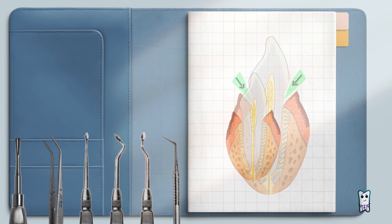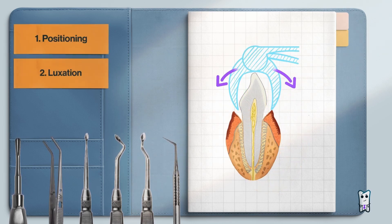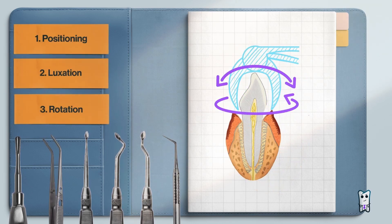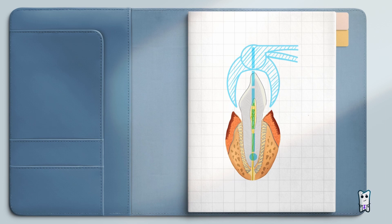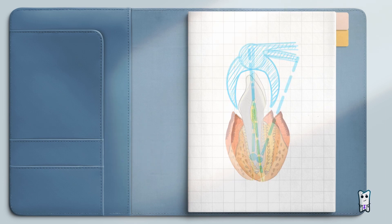Positioning, luxation, and rotation of the surgical instrument is the most complex step of the extraction process, and the success of the procedure largely depends on it. This is why there are additional videos for this step. The main idea here is to tear the alveolodental ligaments.